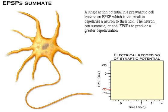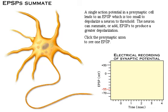A single action potential in a presynaptic cell leads to an excitatory post-synaptic potential which is too small to depolarize a neuron to threshold. The neuron can summate, or add, excitatory post-synaptic potentials to produce a greater depolarization. Click the presynaptic axon to see one EPSP.